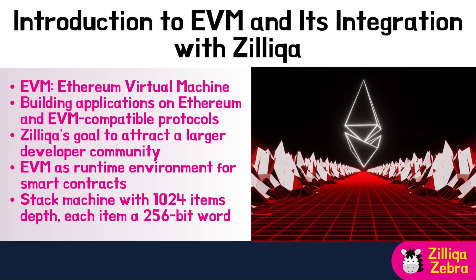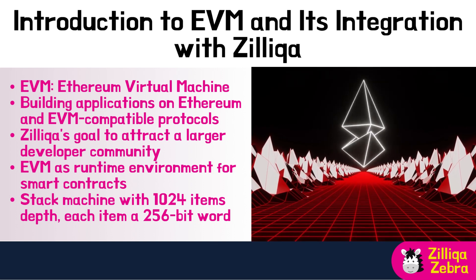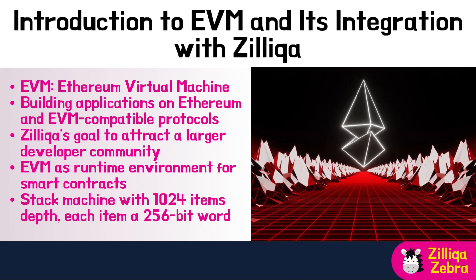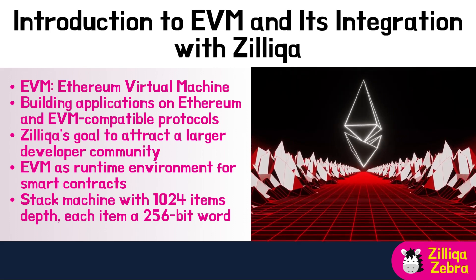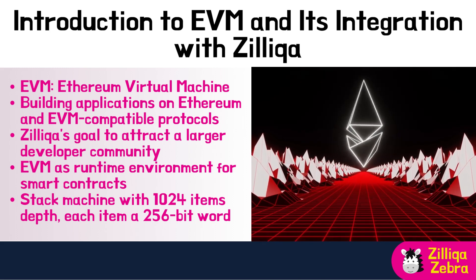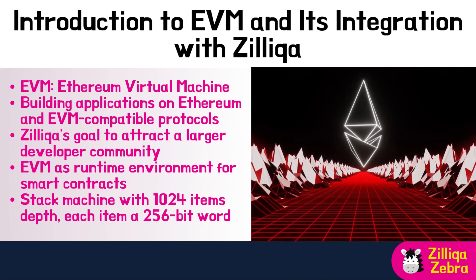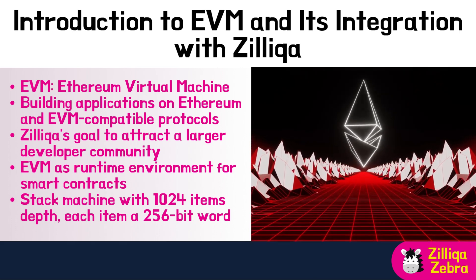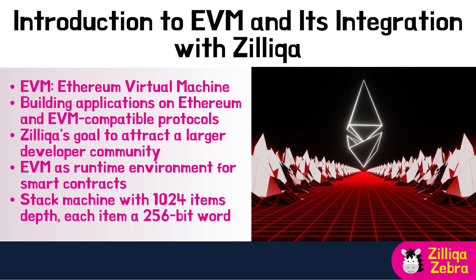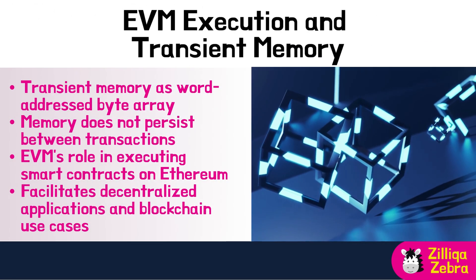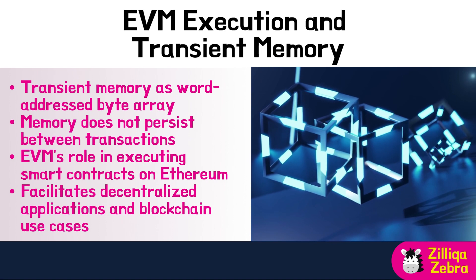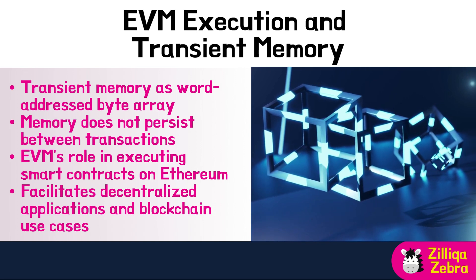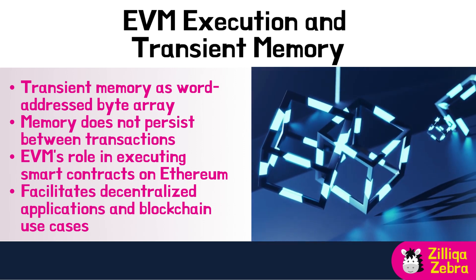The Ethereum Virtual Machine is a crucial component of the Ethereum blockchain, serving as the runtime environment for smart contracts. The EVM operates as a stack machine with a depth of 1024 items, where each item is a 256-bit word. This design choice was made to facilitate ease of use with 256-bit cryptography, such as Keccak-256 hashes or SECP256k1 signatures. During execution, the EVM maintains a transient memory in the form of a word-addressed byte array. This memory does not persist between transactions, meaning it is temporary and only used for the duration of a specific transaction.